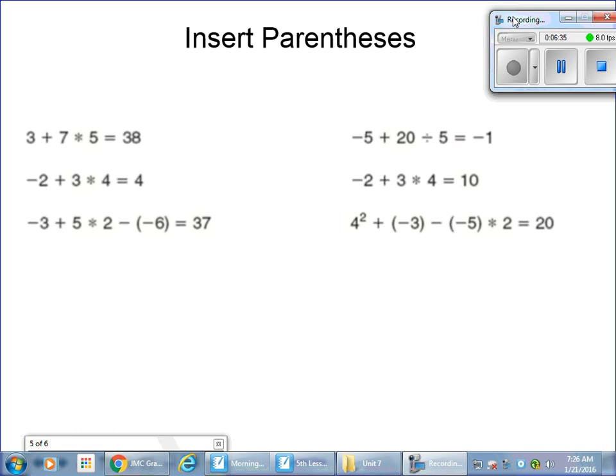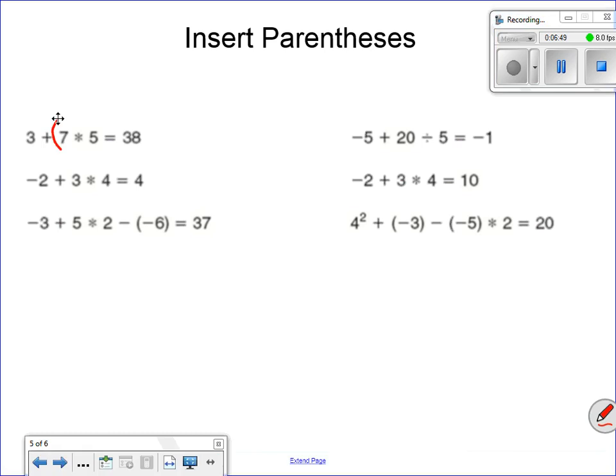3 plus 7 times 5. I have to get to the number 38. Where am I going to put my parentheses? So when I see a 3, a 7, and a 5, I've got to think. I've got to get to a big number like 38. So I might have to multiply. I go 7 times 5 here, kids. That would give me 35, right? Which then I could add to this 3, which would give me 38. That's where you would insert the parentheses on this problem.